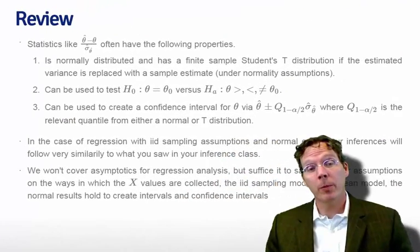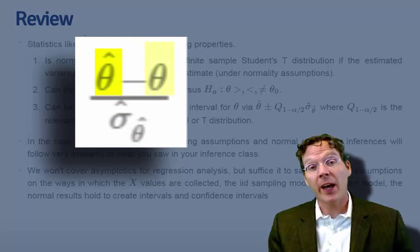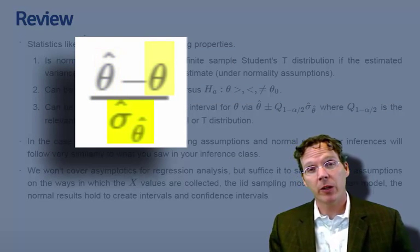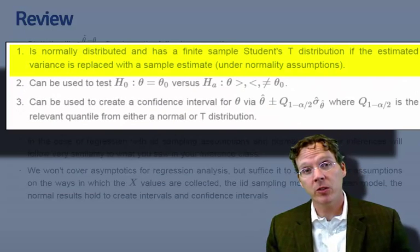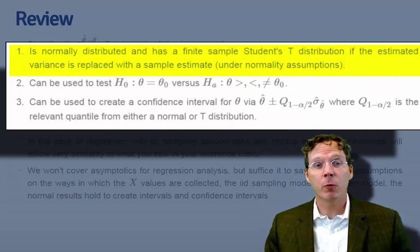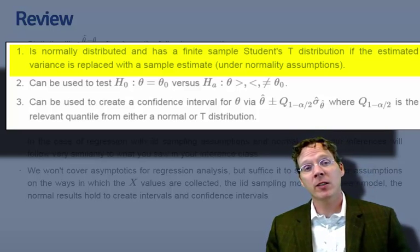Let's review a couple of concepts from statistical inference. First, statistics of the form theta hat minus theta, divided by the standard error, often have the following properties. First of all, they're often normally distributed. And for finite samples, if we replace the variance with the estimated variance, they often have a t distribution.